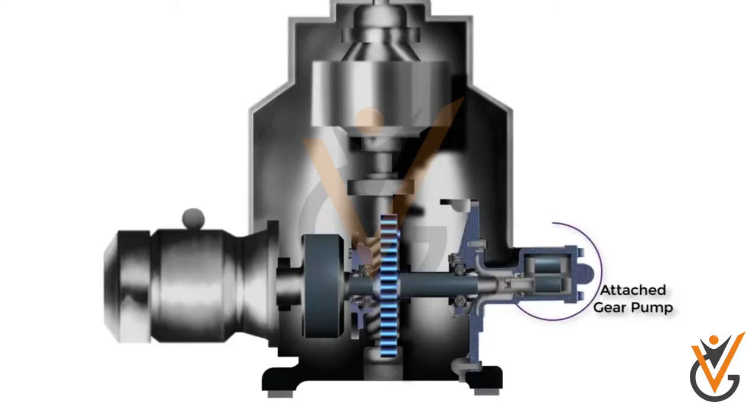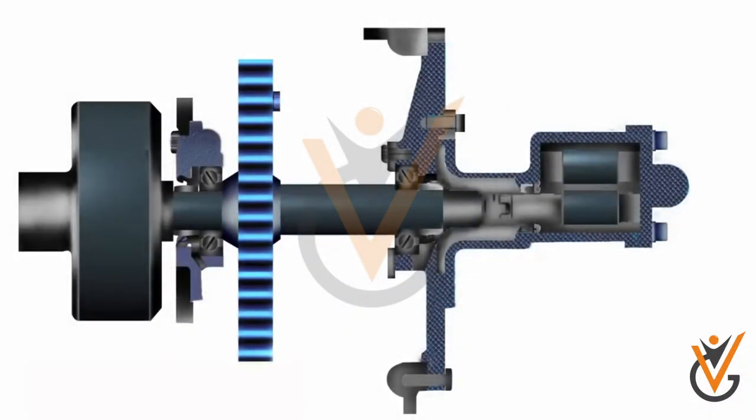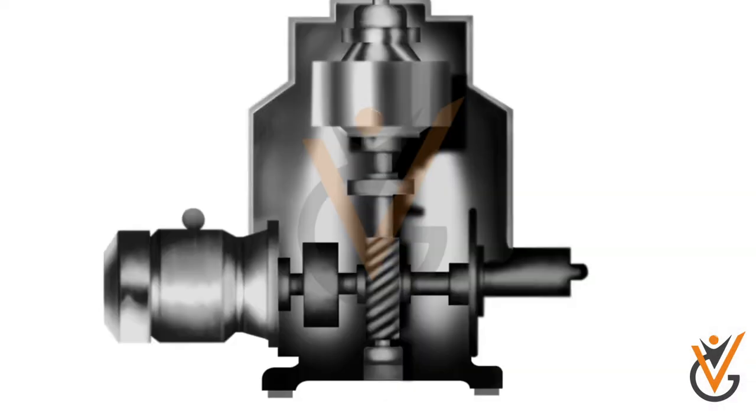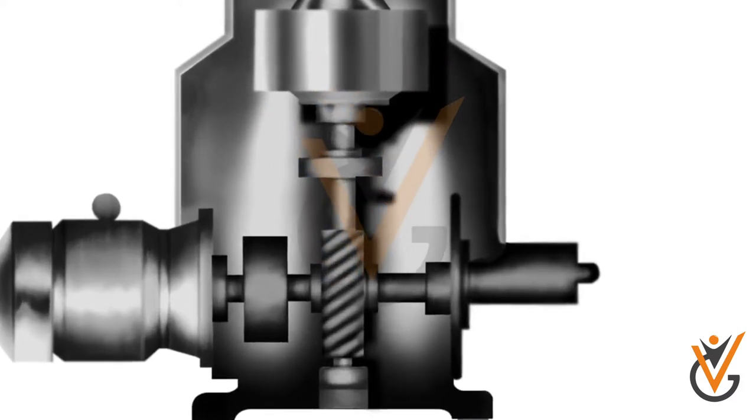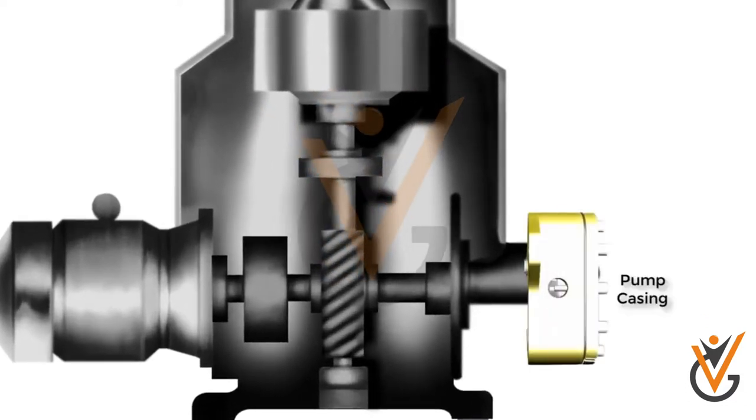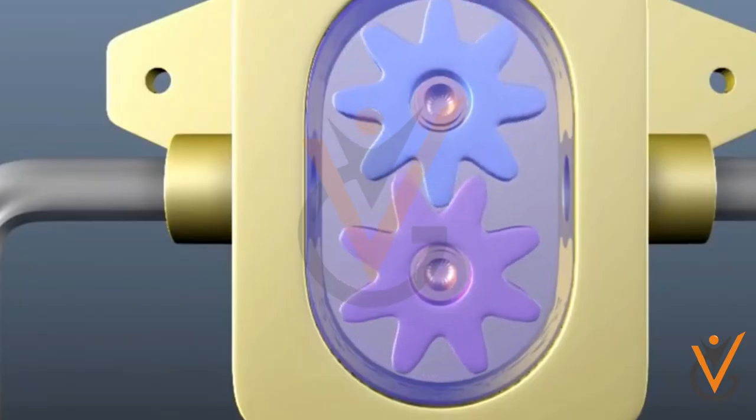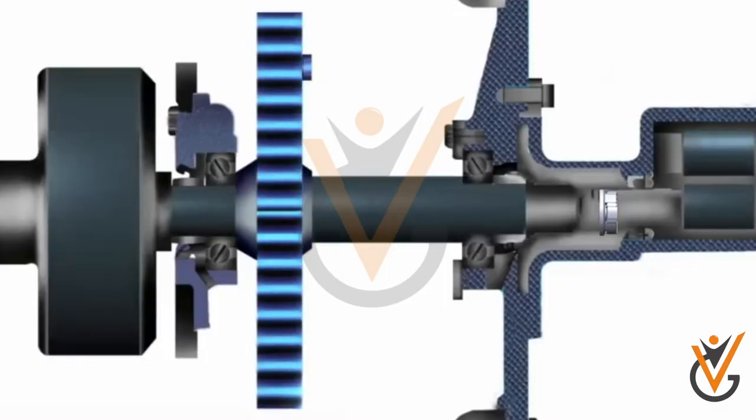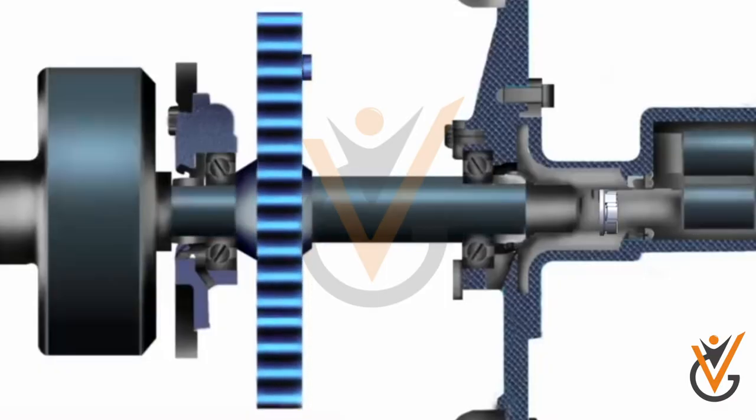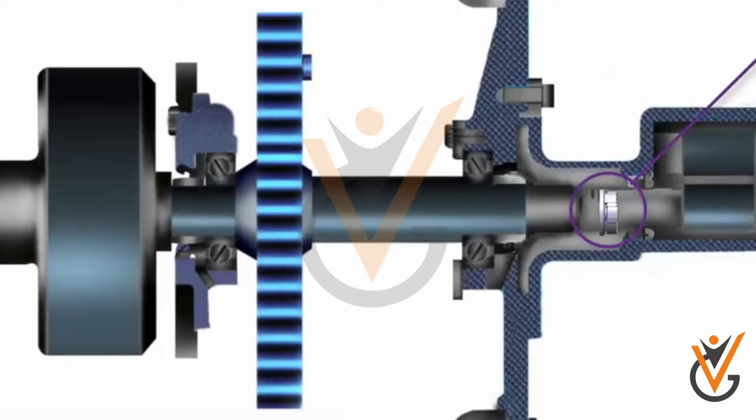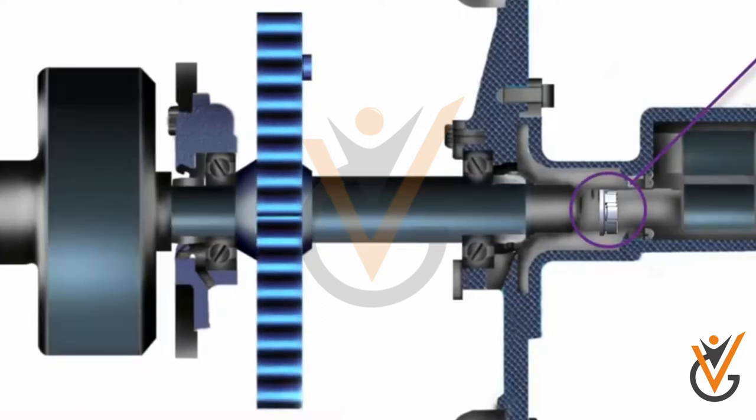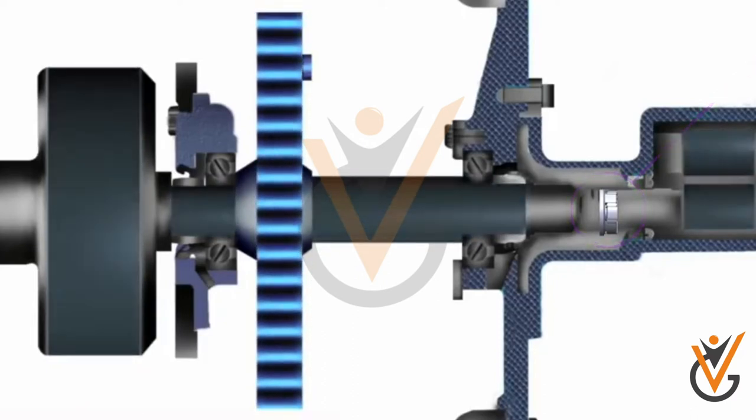Attached gear pump: The general construction of purifier on ships consists of a horizontal shaft-driven attached supply or discharge gear pump. It is also known as a feed pump of the purifier. In some systems, an external supply pump may be installed in place of the attached pump. This pump supplies dirty oil to the purifier.